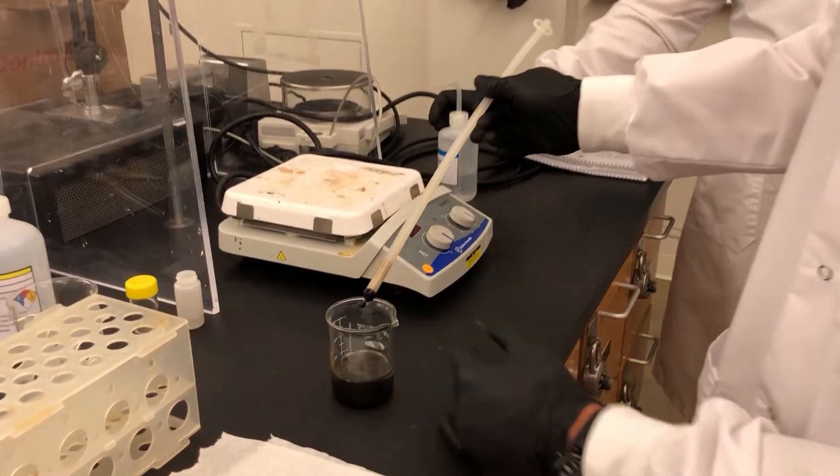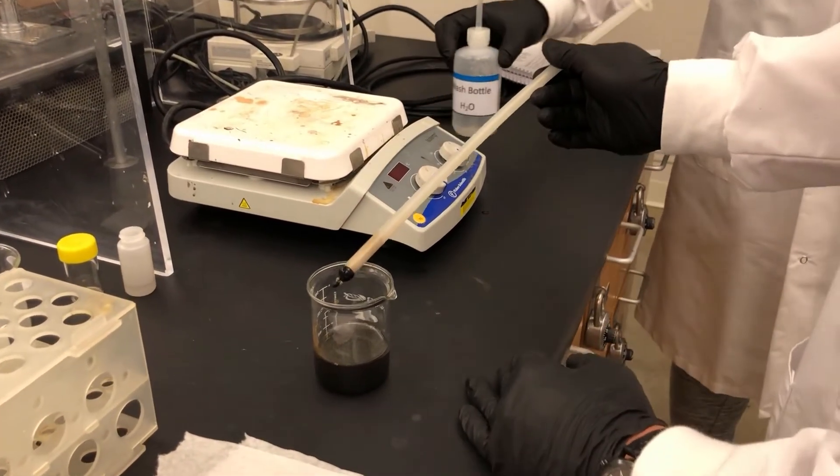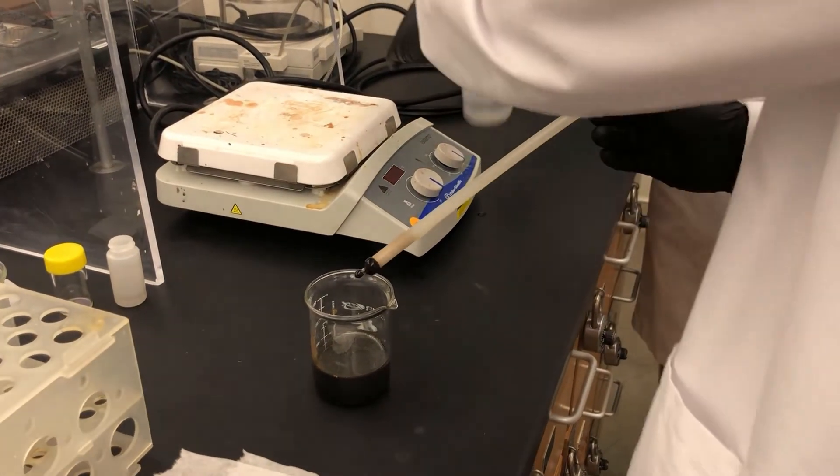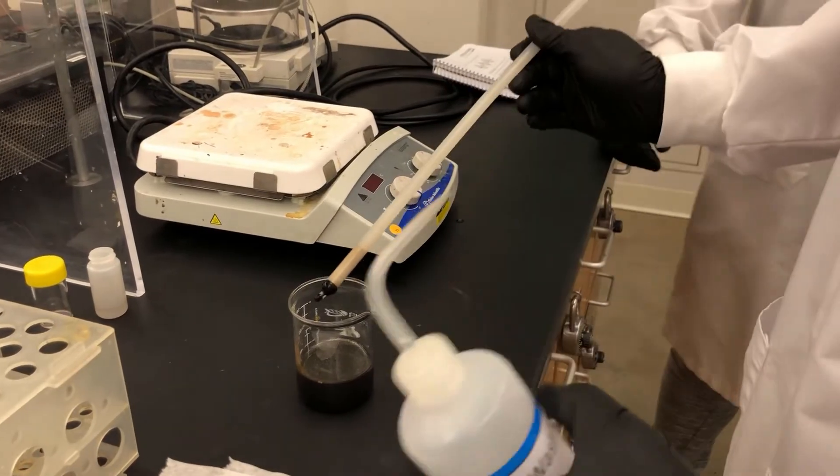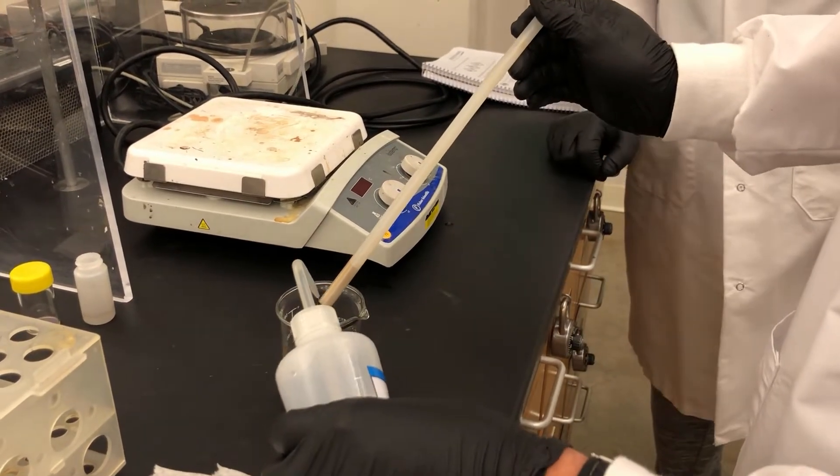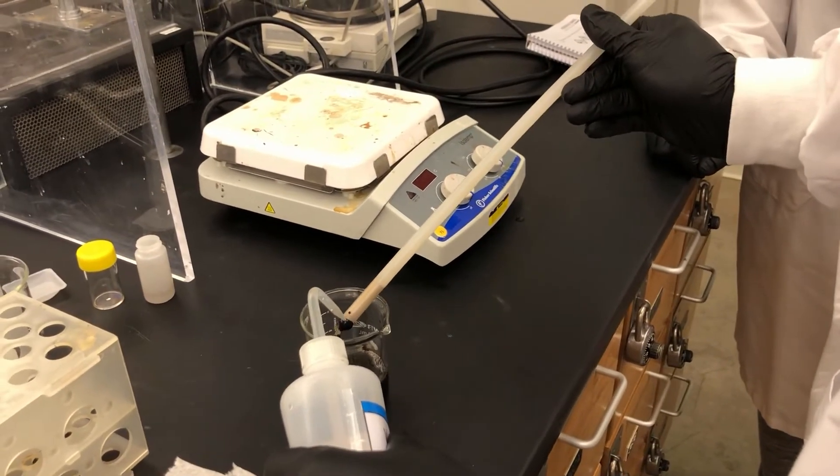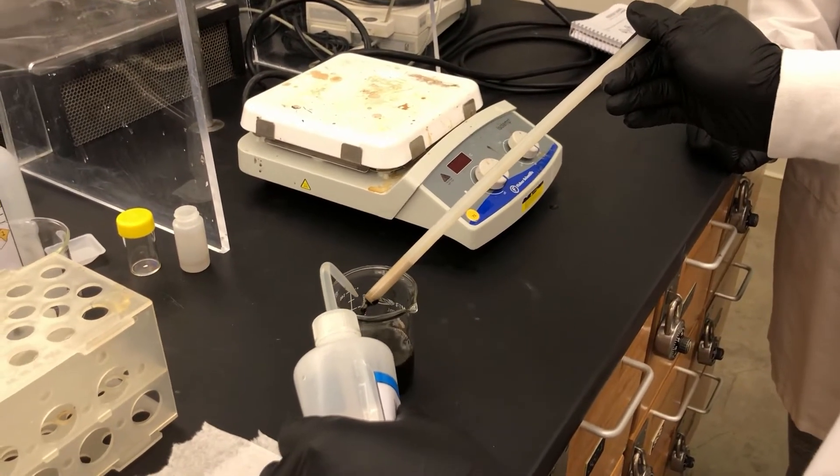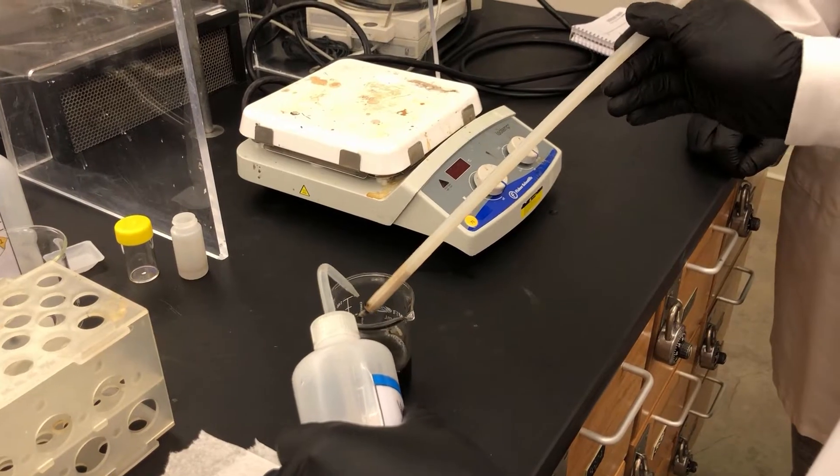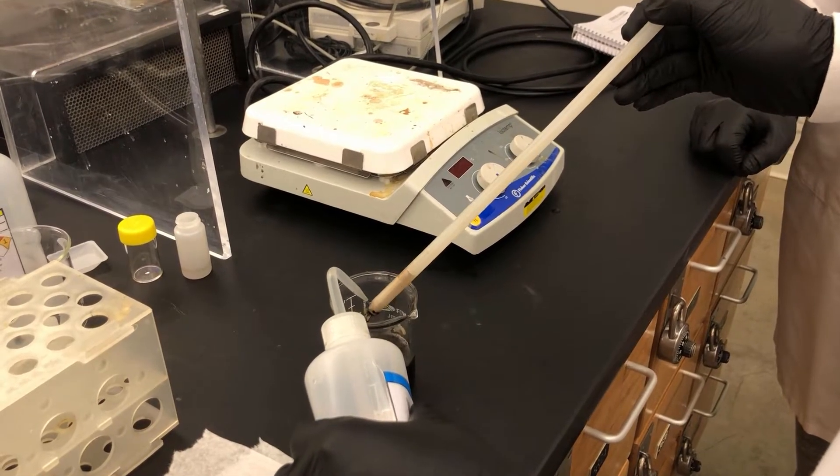So I'm going to take this away and pull out my micro stir bar with this magnetic wand. There it is. As you can tell, some of these iron nanoparticles are now attaching to my magnetic wand. So I'm just going to rinse it off with some distilled water. Try and get that as clean as possible.